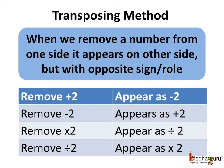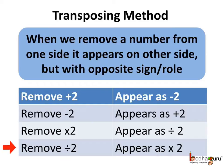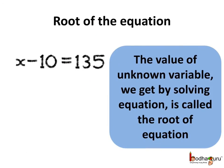Removal of plus 2 means it appears as minus 2 on the other side. And removal of minus 2 from one side of the equation means it appears as plus 2 on the other side of the equation. The same happens for multiplication and division too. The value of the variable which we get by solving the equation is called the root of the equation.